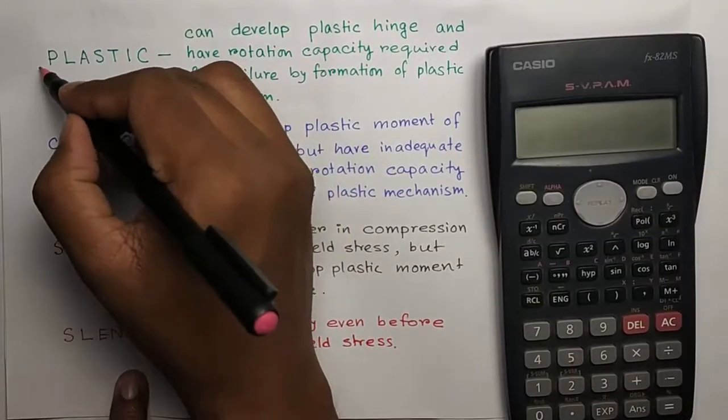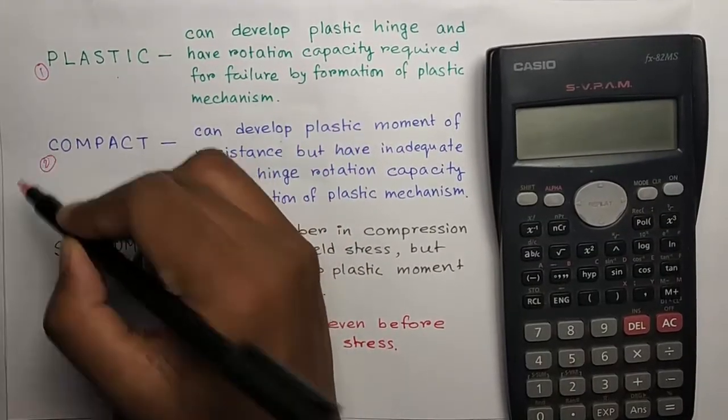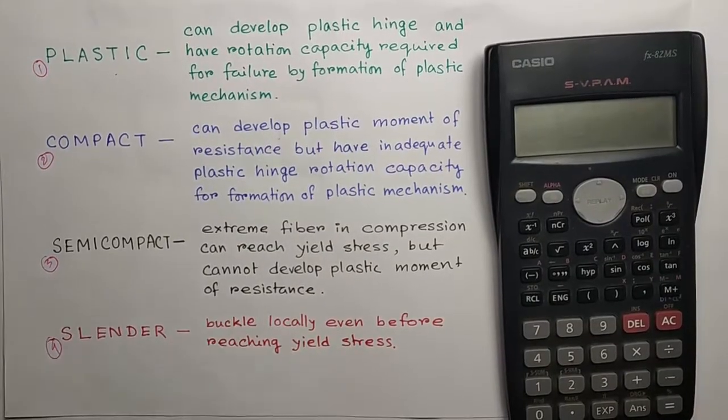Number one, it is called class one plastic. Number two, compact. Number three, semi-compact, and class four is slender.